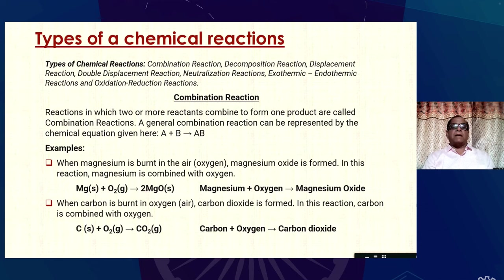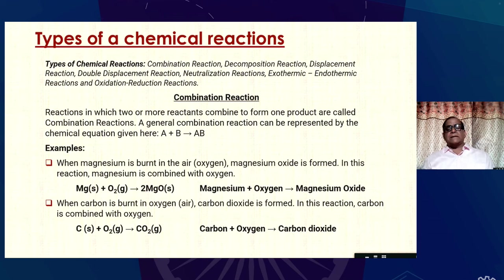What are combination reactions? Reactions in which two or more reactants combine to form one product are called combination reactions. A general combination reaction may be represented as A + B → AB, where A and B are reactants and AB is the product. The reactants combine to form a product — these types of reactions are known as combination reactions.